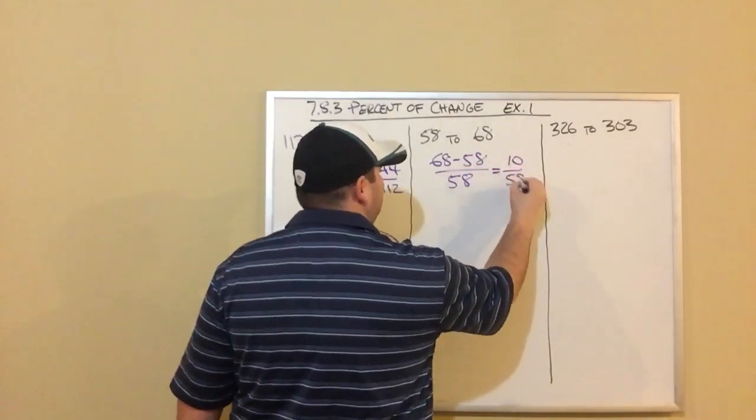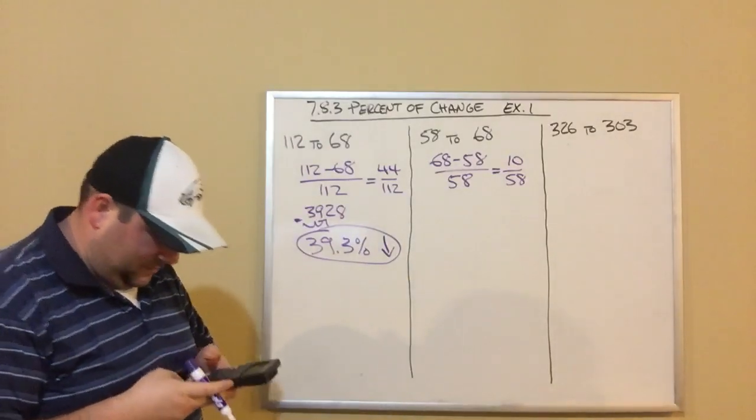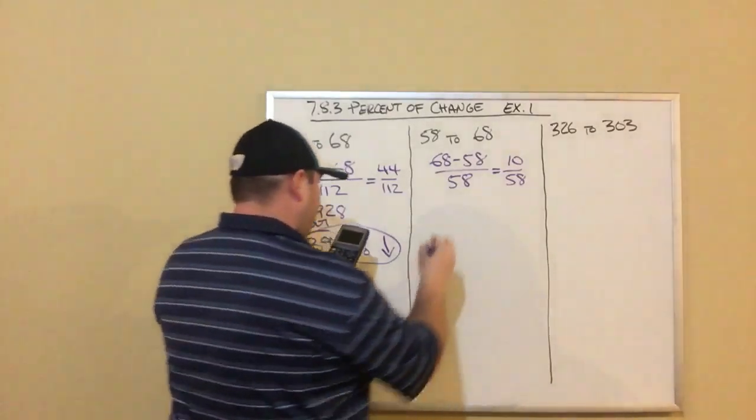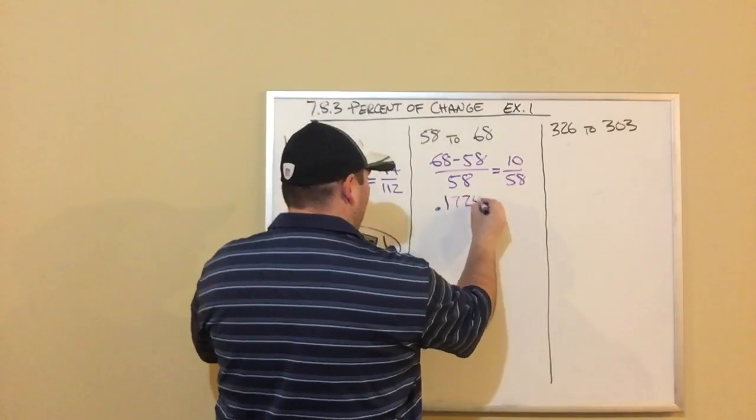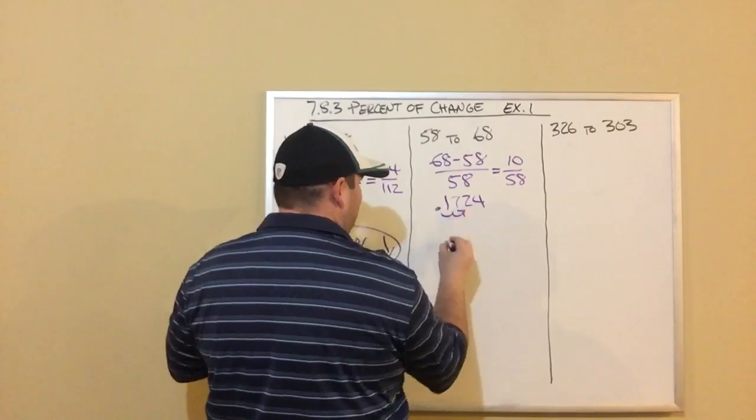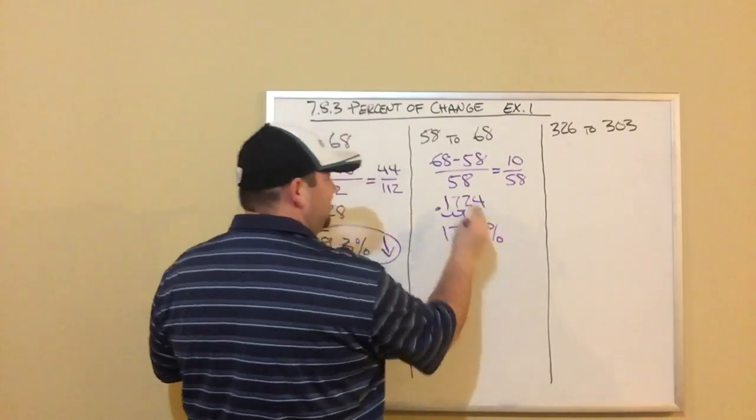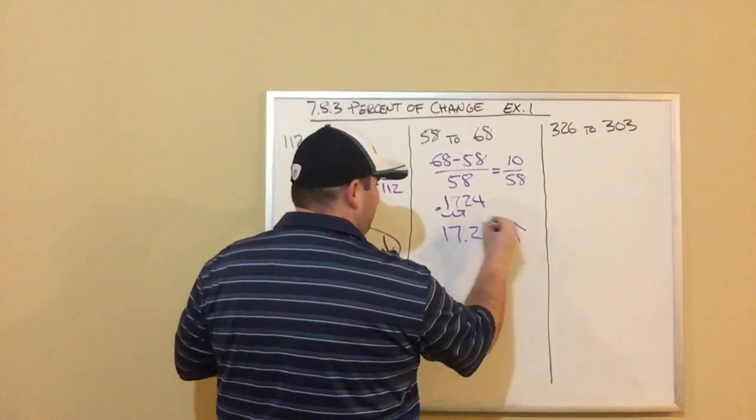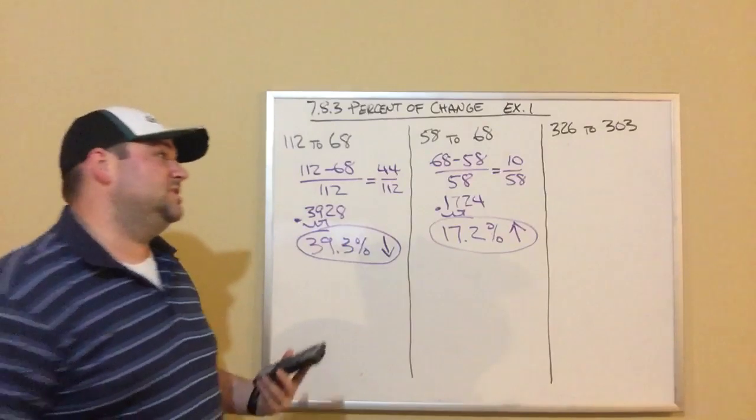So we got 10 divided by 58. We're just going to calculate that. 10 divided by 58. I'm getting 0.1724. I'm going to move my decimal two to the right. Round to the nearest tenth. So this is 17.2%. And this is an increase. It's an increase because we started with 58 and we went up to 68.